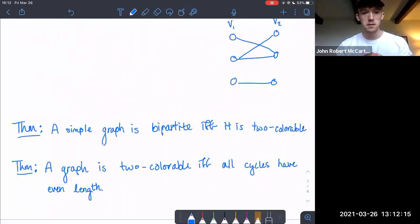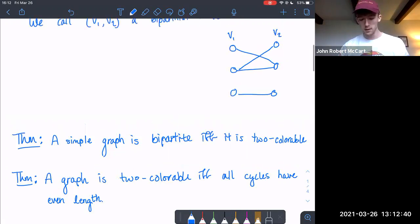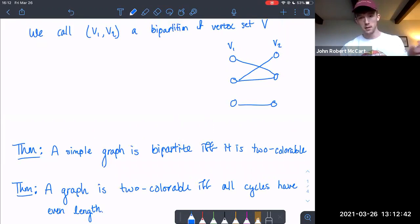And here we have two theorems that are going to help us determine quicker whether a graph is bipartite or not. So our first theorem says that a simple graph is bipartite if and only if it is two-colorable. So what does two-colorable mean exactly? Essentially, a graph is two-colorable if we can run through the vertices and color them different colors in such a way that if we choose a vertex of one color, any of that vertex's neighbors has an opposite color.